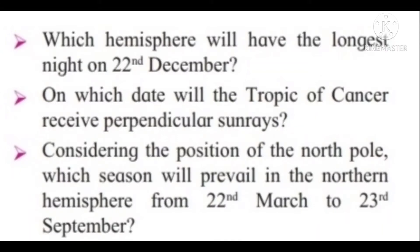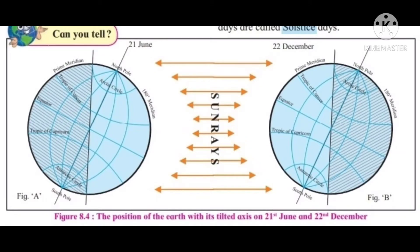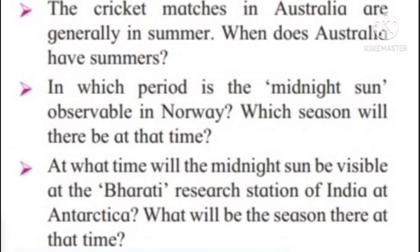On 21st June, the Tropic of Cancer will receive perpendicular rays. Considering the position of the north pole, which season will prevail in the northern hemisphere? From 22nd March to 23rd September, it will be spring from March to June and summer from June to September. The cricket matches in Australia are generally in summer. When does Australia have summer? Australia has summer during December, January and February. In which period is the midnight sun observable in Norway? The midnight sun is observable in Norway from 14th May to 29th July. It will be summer in Norway from 14th May to 21st July.